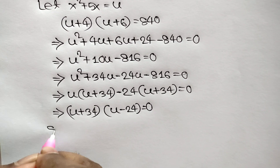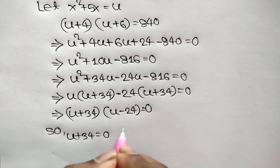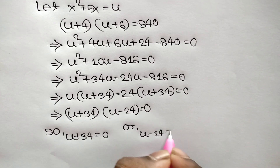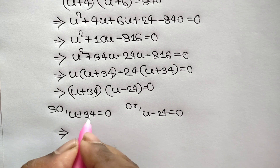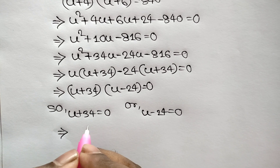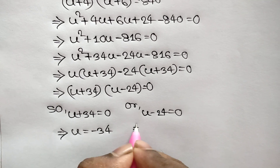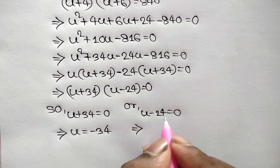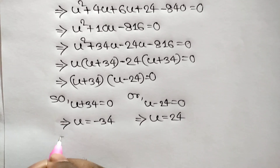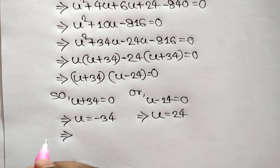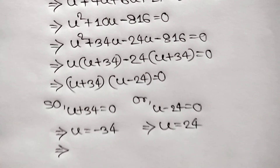Taking (u+34) common we get (u+34)(u−24) equals 0. So either u+34 equals 0 giving u equals −34, or u−24 equals 0 giving u equals 24. Remember u equals x²+5x.